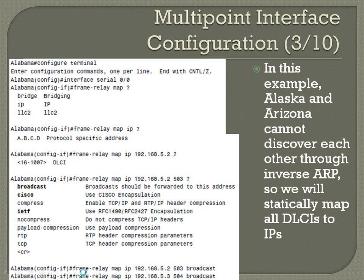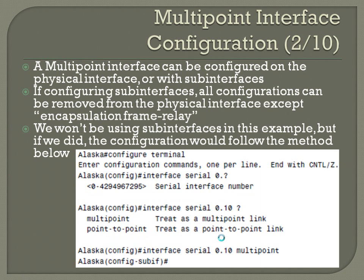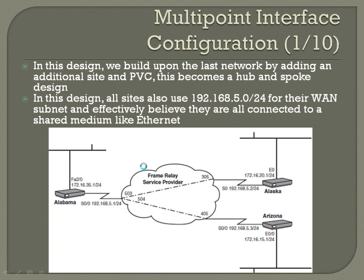Going back to the map, you can see why that's set up that way. You've got .2 here and .3 here. .2 matches up with DLCI 503, .3 matches up with DLCI 504. And if you go back to our configuration, that's exactly how this is set up — .2 goes to 503, .3 goes to DLCI 504.